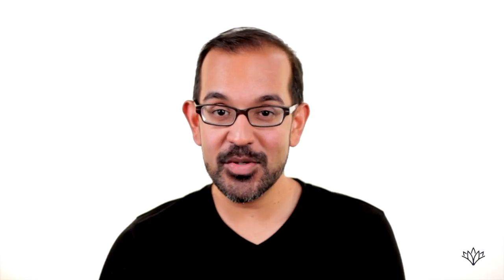All right, now this question I have messed up multiple times. I know exactly what I need to do for this question, but for some reason, every time I see it, I make the same silly mistake, and I want you to see how to do it correctly. It's asking: what is the perimeter of the figure above with angle A equals 60?